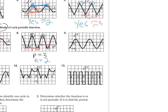For number nine, the period is going from zero to two. The amplitude — look at the height — this is at two and this is at negative four, so the height is six. The amplitude is half of that, so it's three.